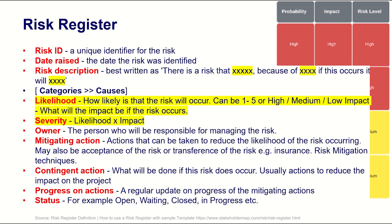You need to identify each risk with a number and describe it in a separate column with more details, so it will be clear what the risk is about. We have one specific column for the risk ID, one for the risk description, and you may want to add a column for the date raised — when the risk was identified. The next column can be category of the risk or causes.